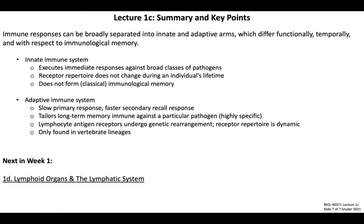In summary, immune responses can be broadly separated into two parts: innate immunity and adaptive immunity. These two arms differ with respect to their functionality, the timing of when they are engaged following exposure to an immunological insult, and their ability to form long-term immune memory. We've also learned more specific differences about the types of receptors used by each system and how they differ in terms of specificity and evolution. As a reminder, you have one more lecture to watch for this week — Lecture 1D will introduce us to the organs of the immune system, which we call lymphoid organs, as well as the lymphatic system, used to move immune cells throughout the body to effectively patrol for signs of infection or injury.